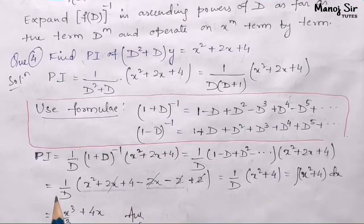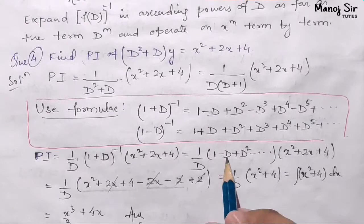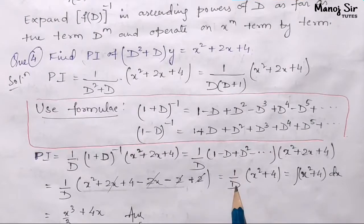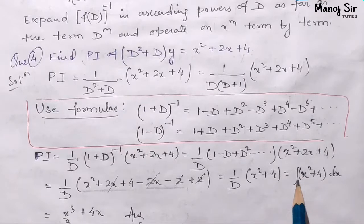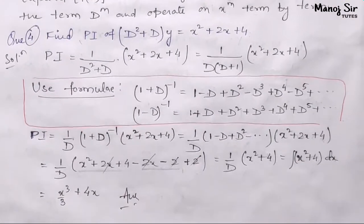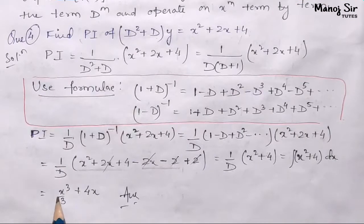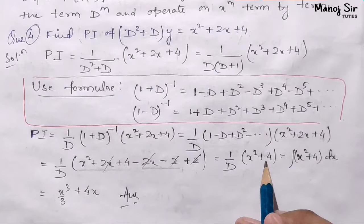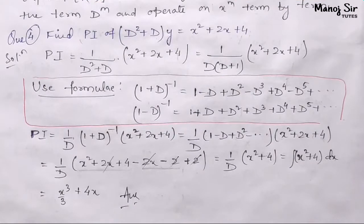1 upon D stands for integration. So we write the integration of (x² + 4) dx. The integration of x² is x³/3, and the integration of 4 is 4x. So the final answer for PI is x³/3 + 4x.